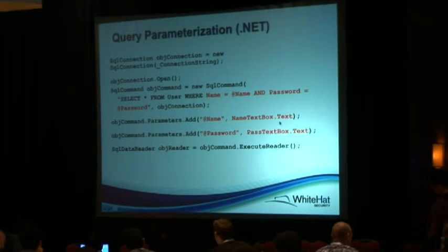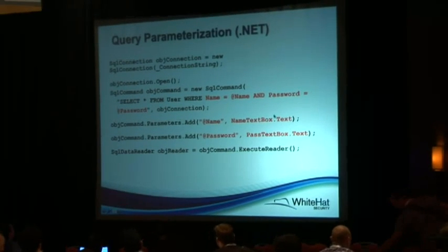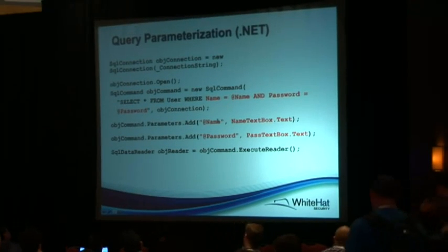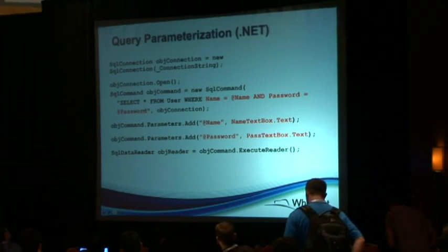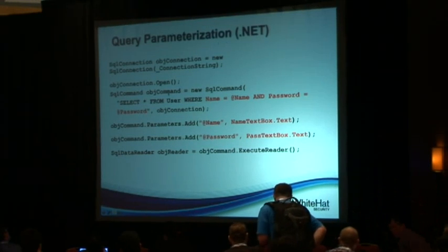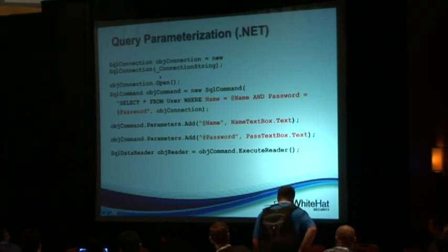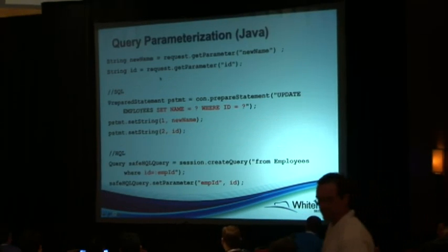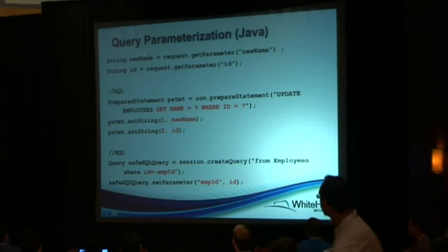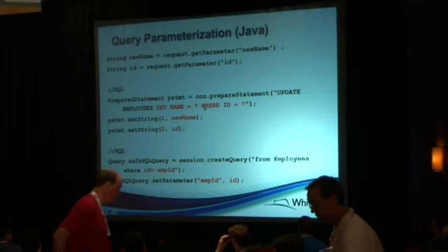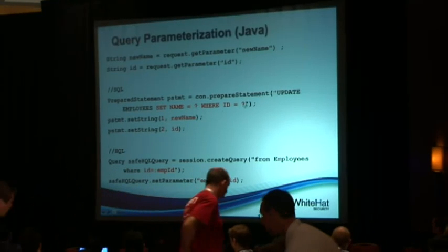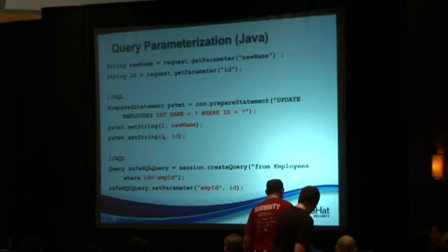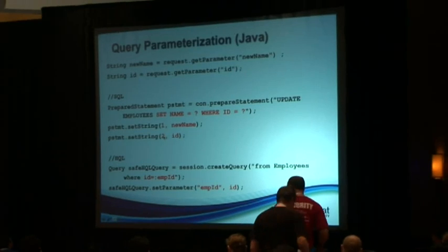Query parameterization is available in .NET. We have untrusted data coming from open text boxes being bound into placeholders in the query. Underneath the hood of .NET, the encoding happens in the right context and this threat goes away. It's available in Java — it's been available in Java for a long time. We're bringing the prepared statement class and binding untrusted data into the query, and this problem goes away.